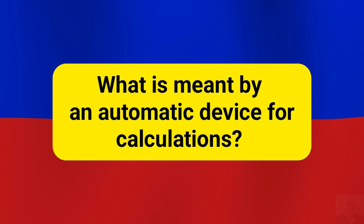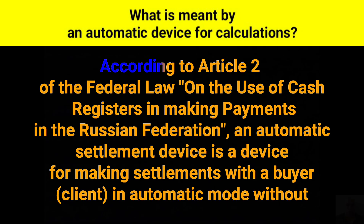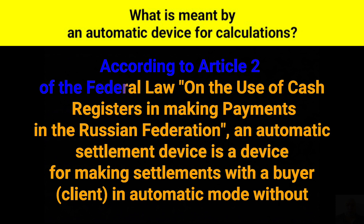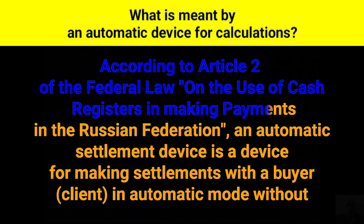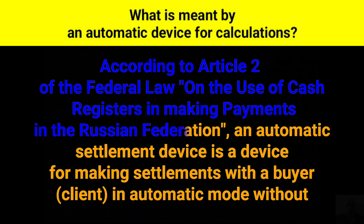What is meant by an automatic device for calculations? According to Article 2 of the Federal Law on the use of cash registers in making payments in the Russian Federation, an automatic settlement device is a device for making settlements with a buyer-client in automatic mode without the participation of an authorized person of an organization or an individual entrepreneur.